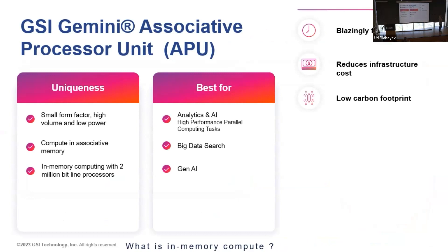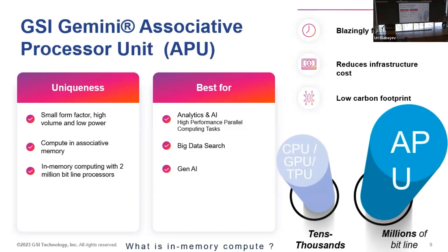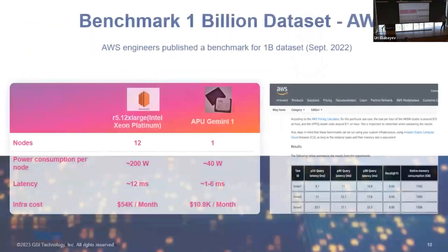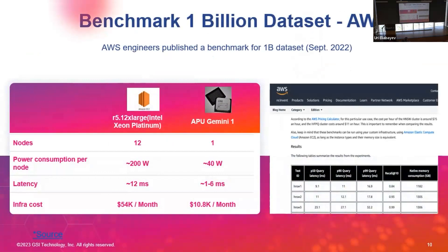The APU is good for different analytics and AI applications — big data, search, and generative AI. Key capabilities include blazing fast speed, significantly reduced cost as I'll show in a benchmark, and very importantly right now, a low carbon footprint.